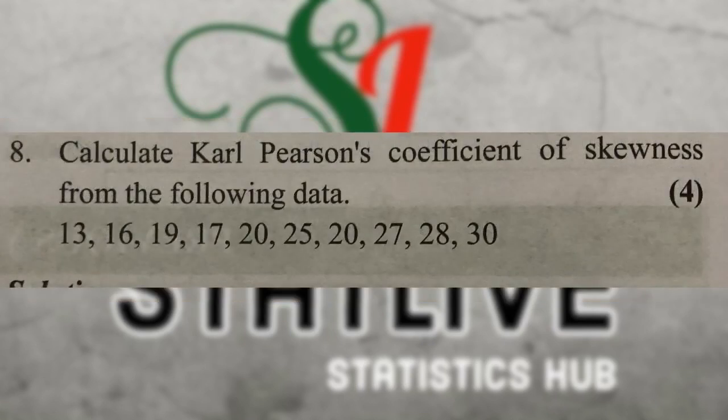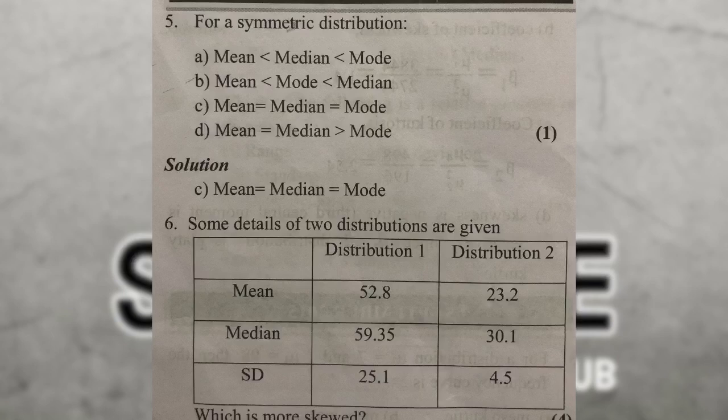Calculate Pearson's coefficient of skewness from the following data: mean (x-bar), sigma (standard deviation), and mode. The mean minus mode divided by standard deviation formula equals Pearson's coefficient of skewness. For a symmetric distribution, mean equals median equals mode.